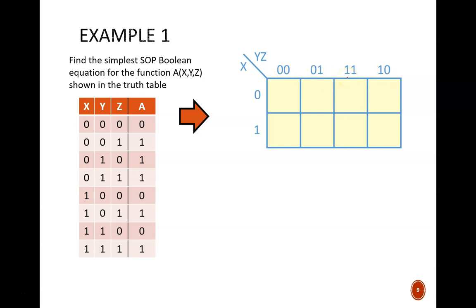There are 8 squares on the K-map, which matches with the 8 rows of the truth table. Now, we copy any output ones from the truth table to the corresponding square on the K-map. In the bottom row, a equals 1, and inputs x, y, z all equal 1. This leads to a 1 in this square. Notice that x equals 1, y equals 1, and z equals 1.